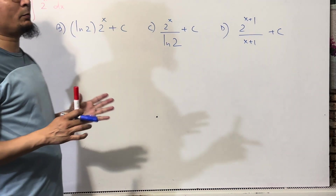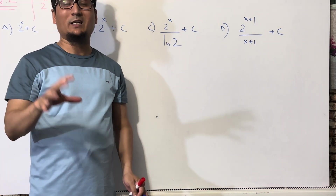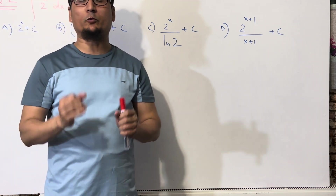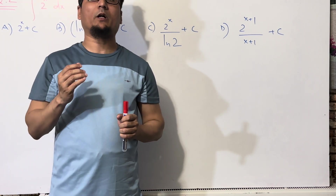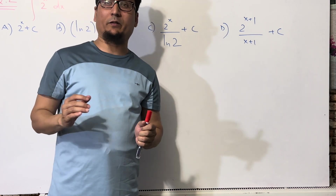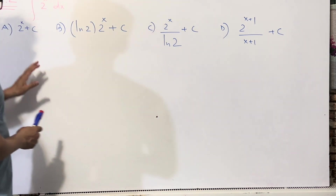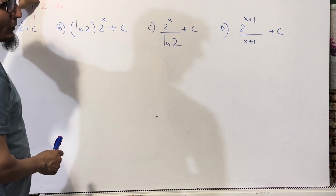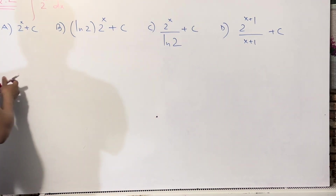My intention is not just to solve this question — my main aim is to give you the details and explain each and everything. Now, if you look at this question, 2^x: here 2 is a number, a constant. So how will I solve this question?